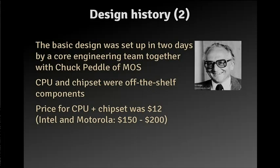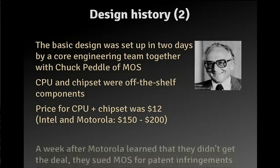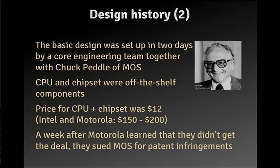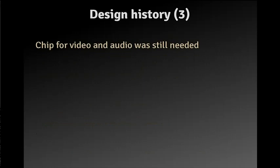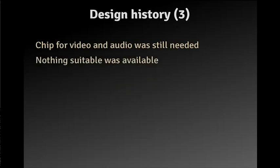MOS got the deal because they were significantly cheaper than the others. The first offer was about $15; Atari sank the price to $12, whereas the competition wanted $150 to $200. The guys at Motorola were sure they wanted to get the deal because they were a bit cheaper than Intel and didn't know about MOS. A week after they learned they didn't get the deal, they sued MOS for patent infringements. But what was still needed was the chip responsible for video and audio — there were no off-the-shelf components available at this time.